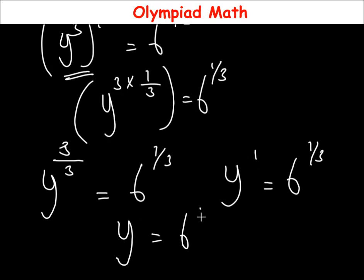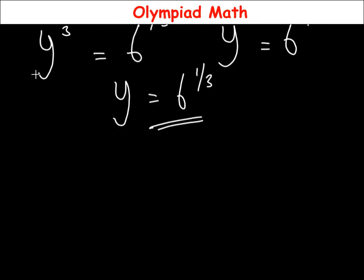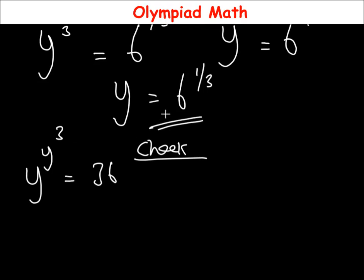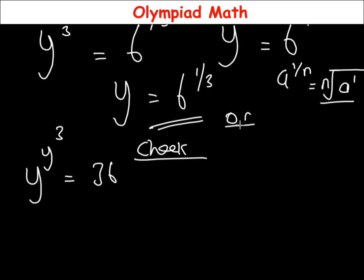Therefore y raised to power 1 is y, which equals 6 raised to power 1 over 3. We can also express this in another form: using the rule that a raised to power 1 over n equals the nth root of a, this becomes the cube root of 6. So y equals 6 raised to power 1 over 3, or equivalently the cube root of 6.